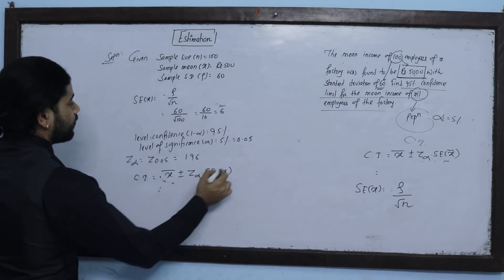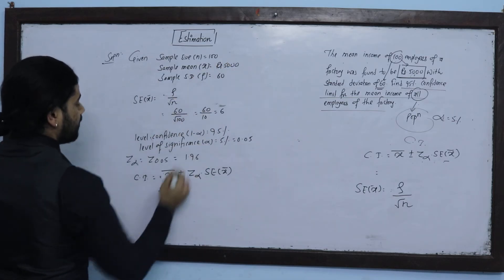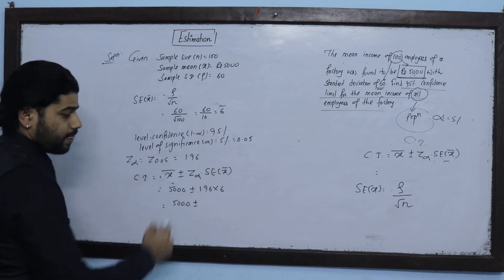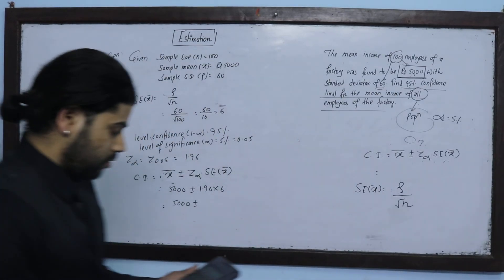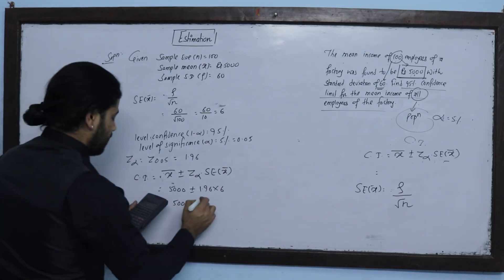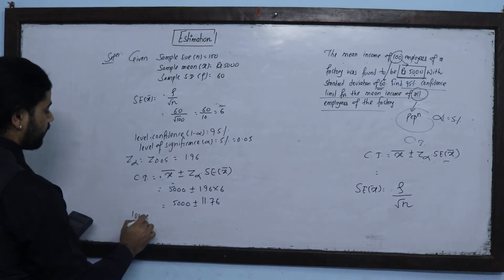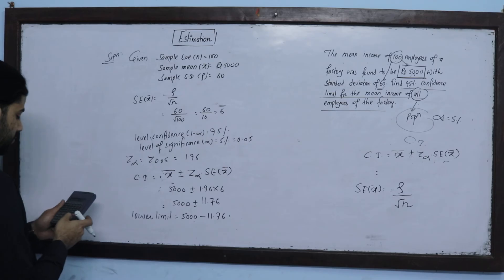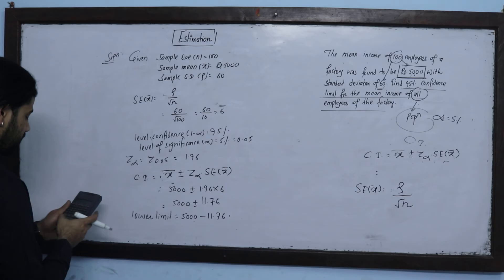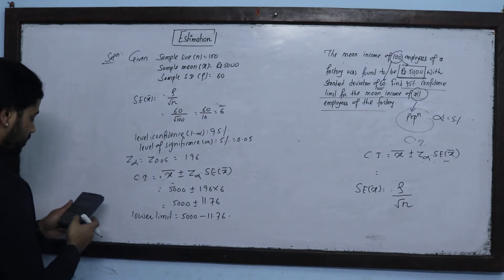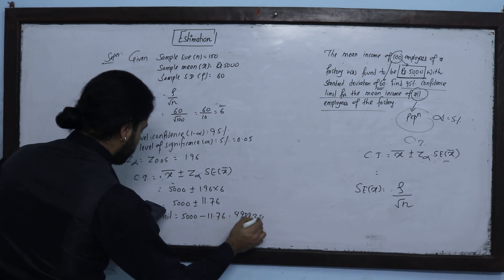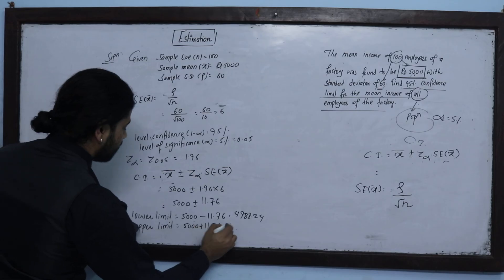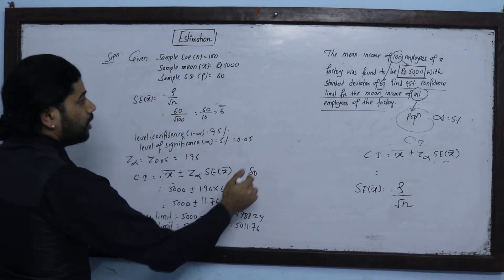The confidence interval is X̄ plus minus Z_alpha into standard error: 5,000 plus minus 1.96 into 6. So 1.96 into 6 equals 11.76. Lower limit: 5,000 minus 11.76 equals 4,988.24. Upper limit: 5,000 plus 11.76 equals 5,011.76.